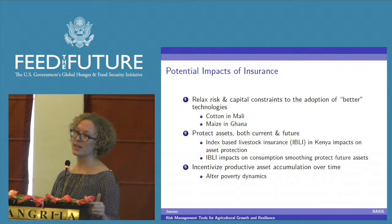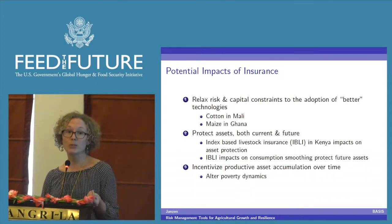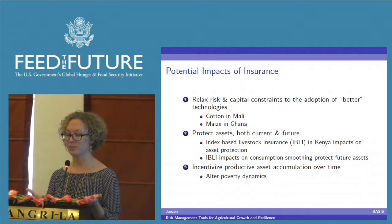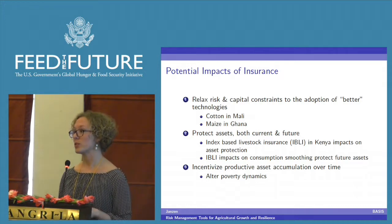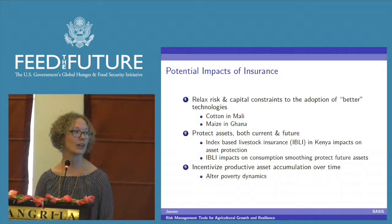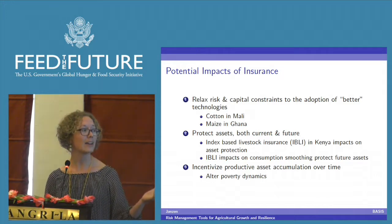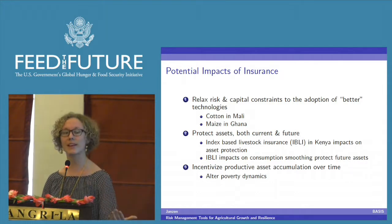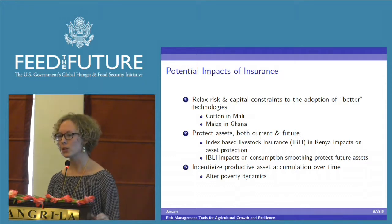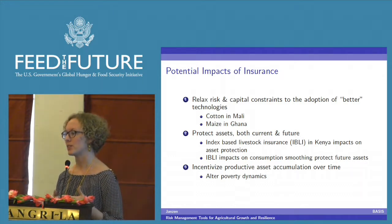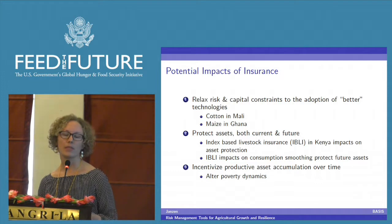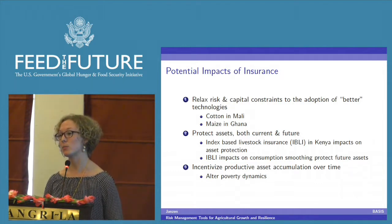The second thing is that when you give households access to insurance, they're able to protect both their productive assets and their consumption, which has huge implications for nutrition. The third idea is that insurance can also incentivize productive asset accumulation. Households will accumulate assets more rapidly and more safely when they have access to insurance.